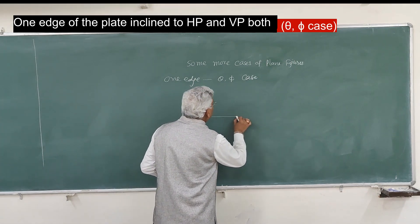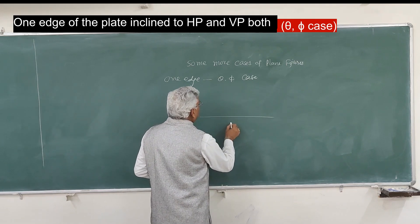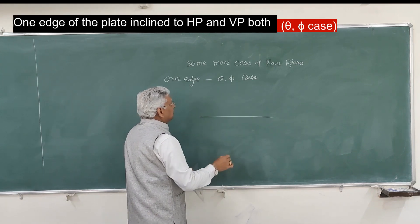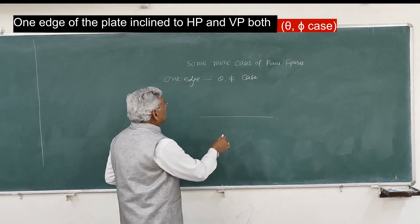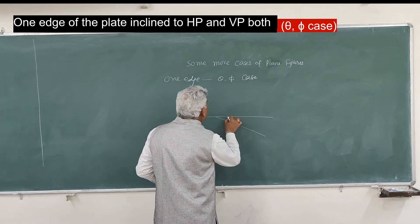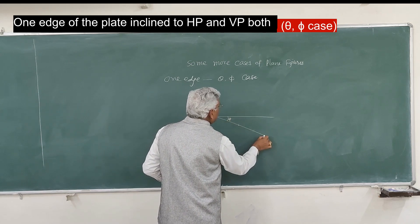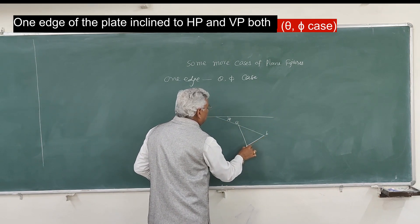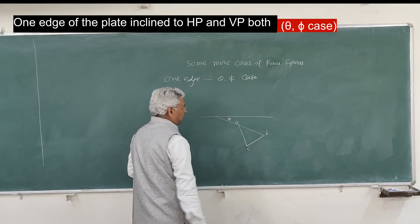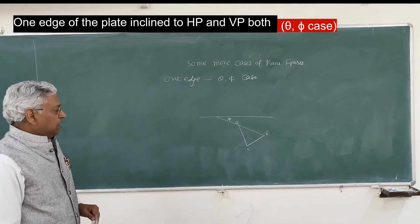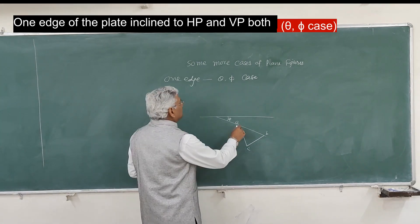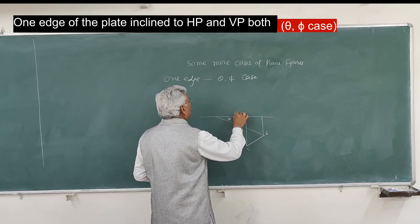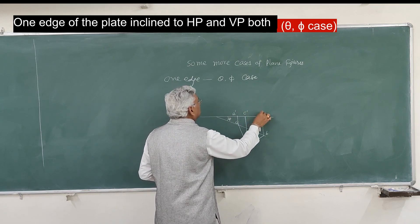First, keep this plate in the horizontal plane satisfying the condition of phi. Let us say this edge AB makes angle phi with the vertical plane. Since it is in the horizontal plane, you get the elevation on the ground line: A', C', B'.